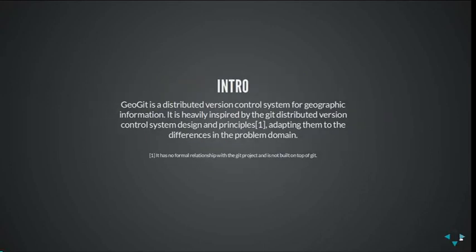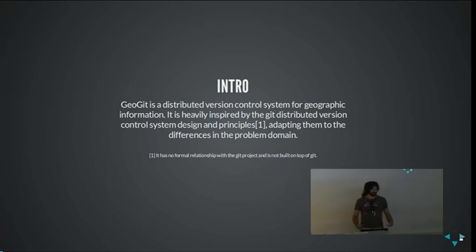I don't know if you're familiar with Git. It's a software for versioning source code. It's pretty popular and some people have started trying to use it to version things other than source code. What we are doing is just taking the same idea, which is distributed versioning, and trying to apply that idea to geospatial data. We are not basing our software on Git itself, but we take the philosophy and the same influences.